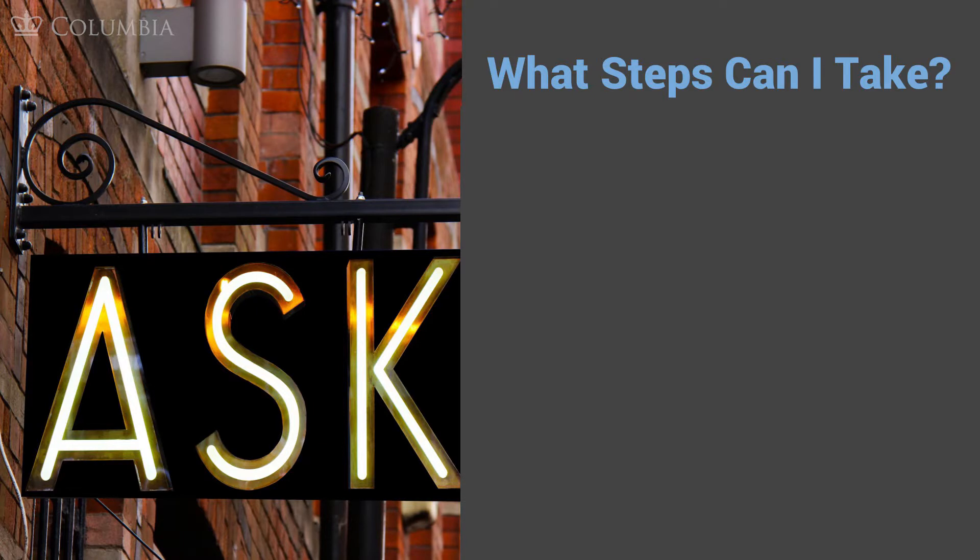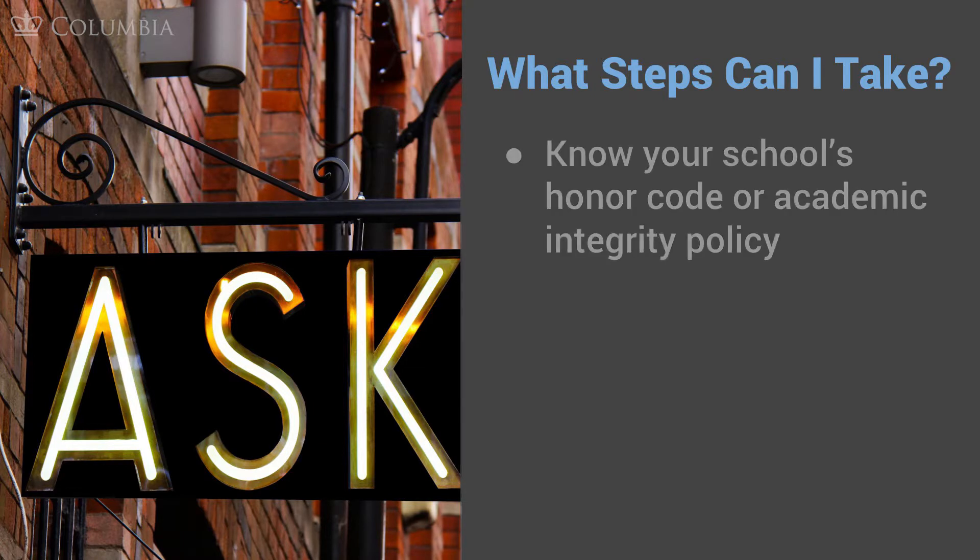So what kinds of steps can you take to make sure you keep yourself safe and do your work in an academically integrous way? The first one is simple: know your school's honor code or their policy around academic integrity. If you don't know the rules, you can't follow them. We don't want to see situations where students commit academic dishonesty without knowing that they've done it.